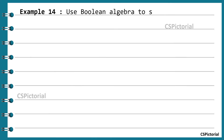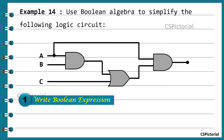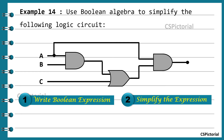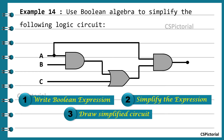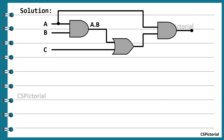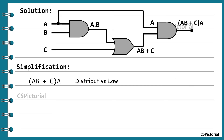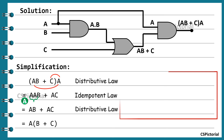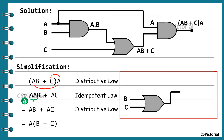Use Boolean algebra to simplify the given logic circuit — done in three steps: write the Boolean expression, simplify it, then draw the simplified circuit. The AND gate with inputs a and b gives ab; OR'd with c gives ab+c; AND'd with a gives a(ab+c). Simplifying this expression in three steps gives a(b+c). So inputs b and c are first OR'd, and b+c is AND'd with a. The number of logic gates is reduced from 3 to 2.